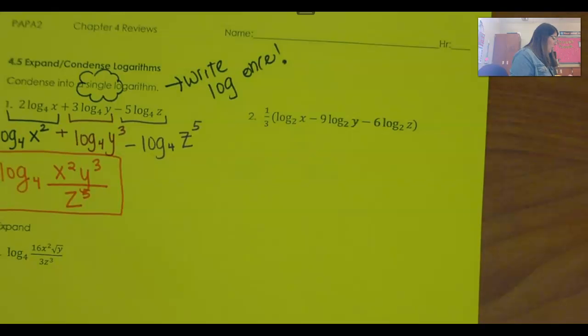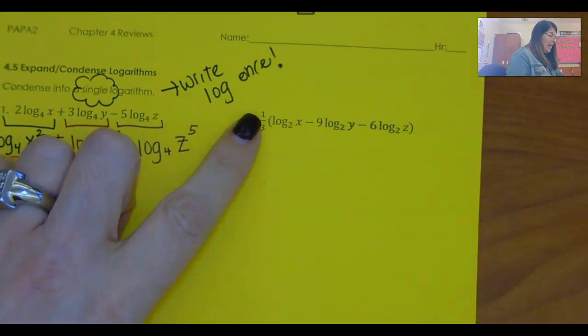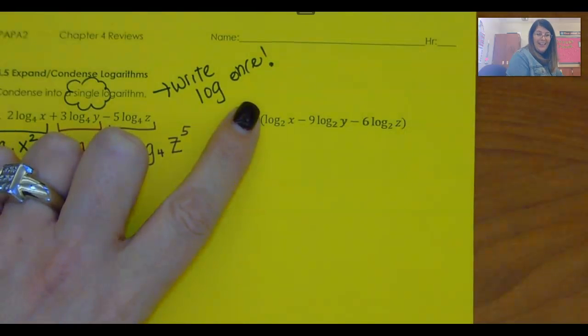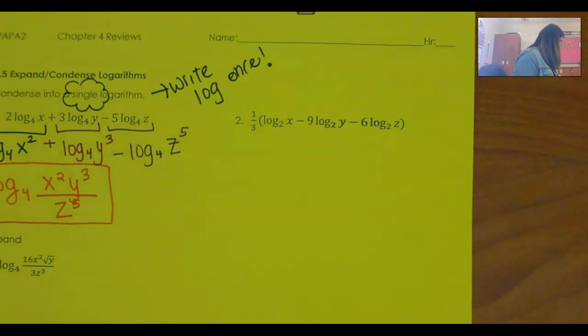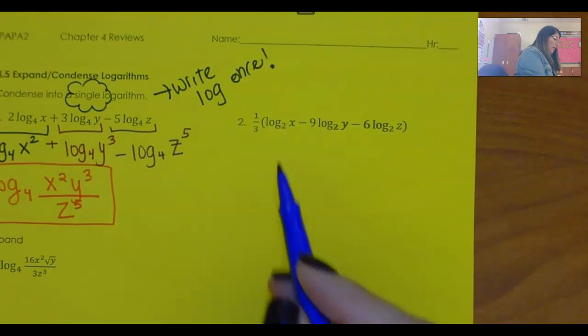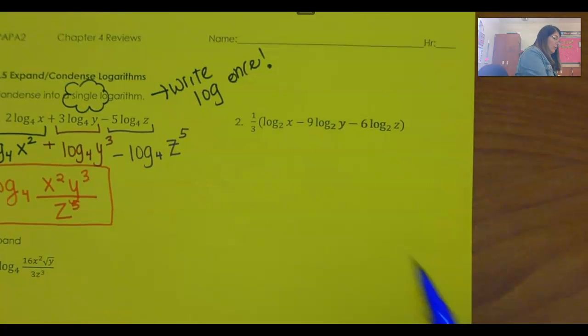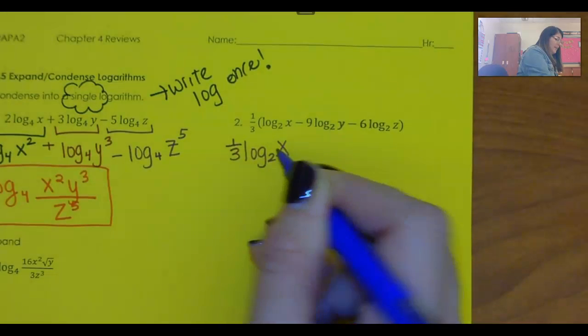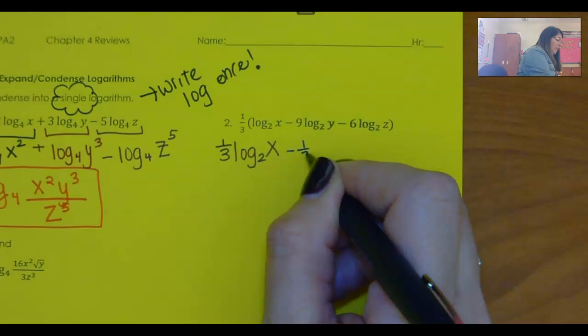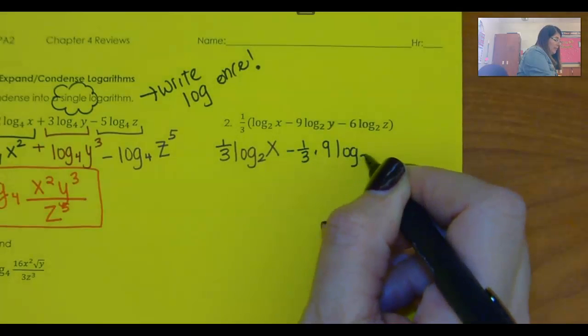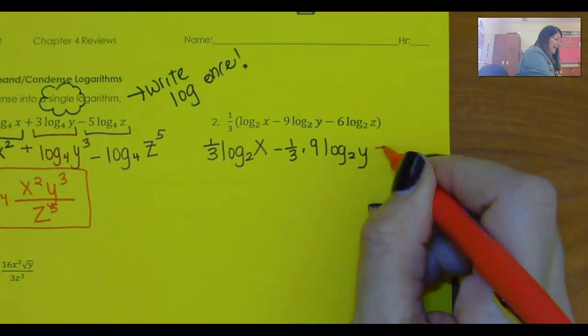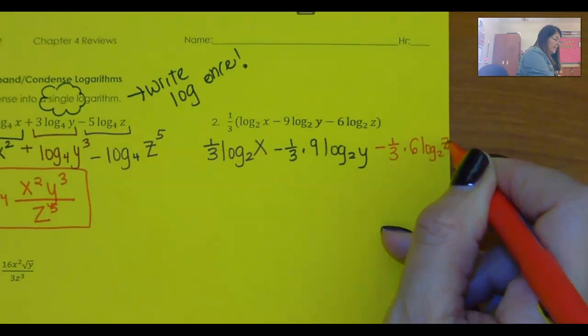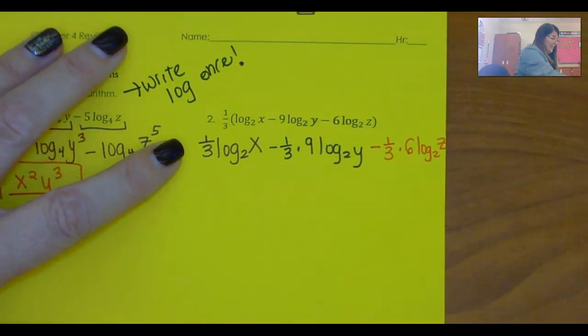Now, this guy, again, I'm going to condense this, but I can work from the inside out and put this 1/3 there at the end, or I can put the 1/3 on each thing. I think, I think, let's do the 1/3 distributed. So that I've got 1/3 log base 2 of x minus 1/3 times 9 log base 2 of y minus 1/3 times 6 log base 2 of z.